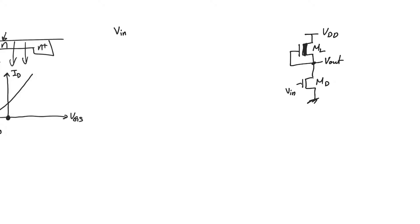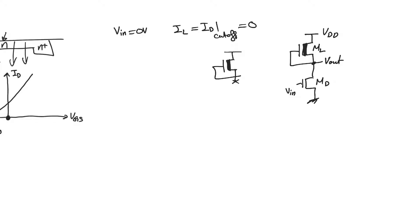Let's first use V_input equals zero volts. Knowing that we should instead use V_input equals V_output_low, it would give us the same results because the driver MD will still be cut off. The only equation we have is that the current in the load equals the current in the driver. The driver is cut off, and therefore the current in the load is equal to zero. So this depletion mode device has no current flowing through it, and yet it is on — because VGS is zero, which is enough to turn the depletion mode load on.